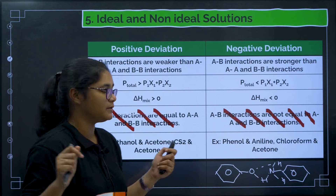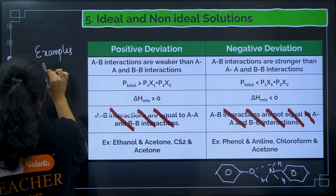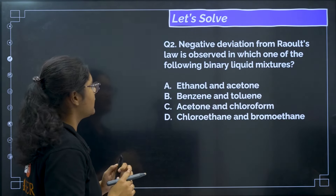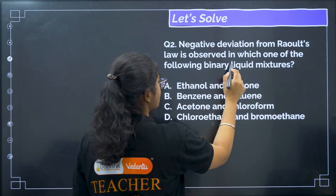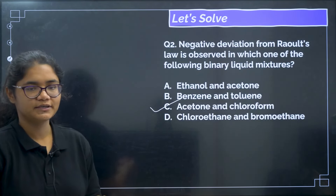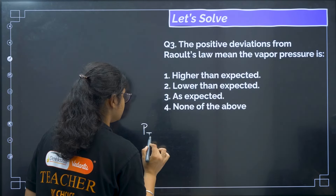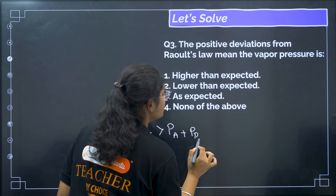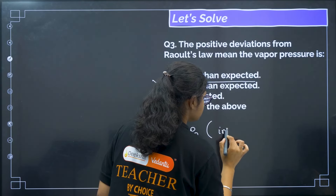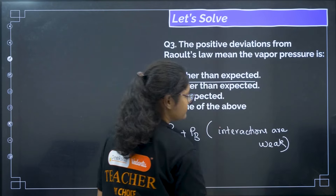Question: Negative deviation from Raoult's law is observed in which of the following? Just now we saw acetone and chloroform show negative deviation, so the correct answer is option C. Next question: positive deviation from Raoult's law means the vapor pressure is higher than expected, because the interactions between the components are weak.